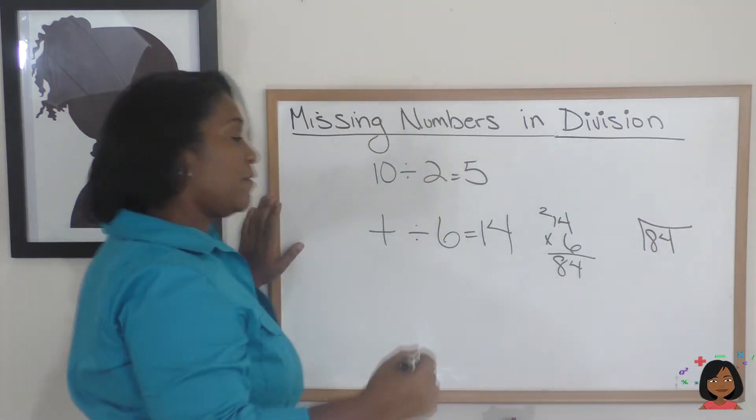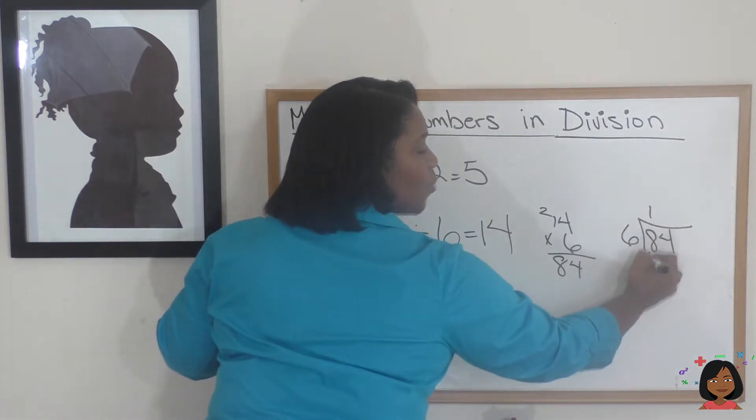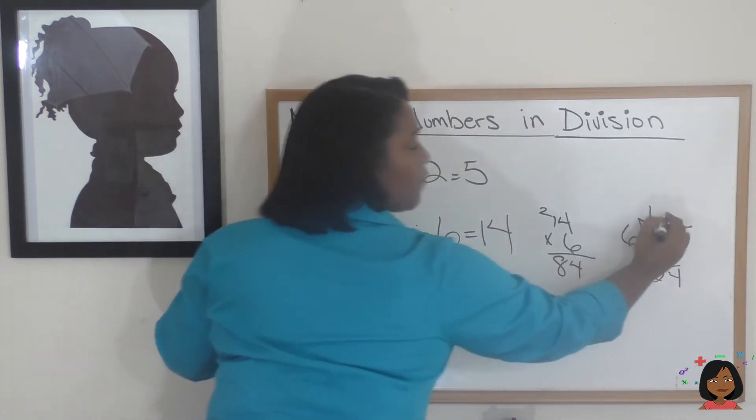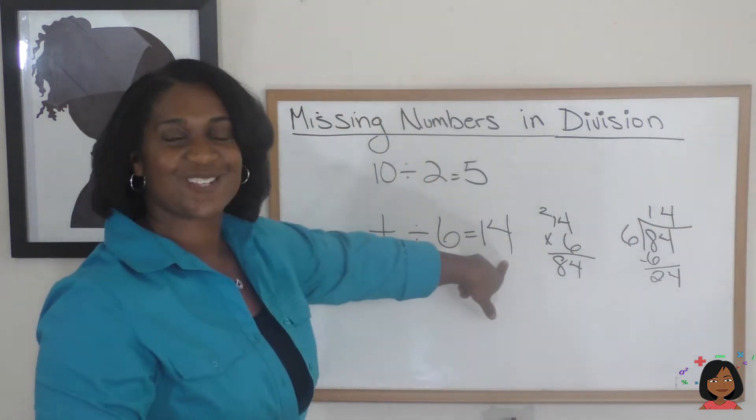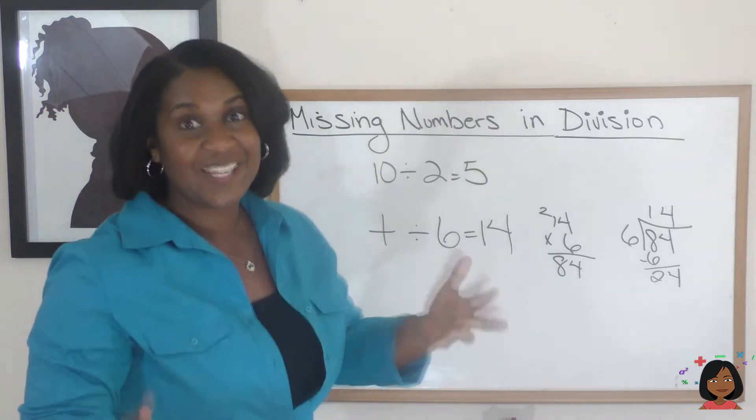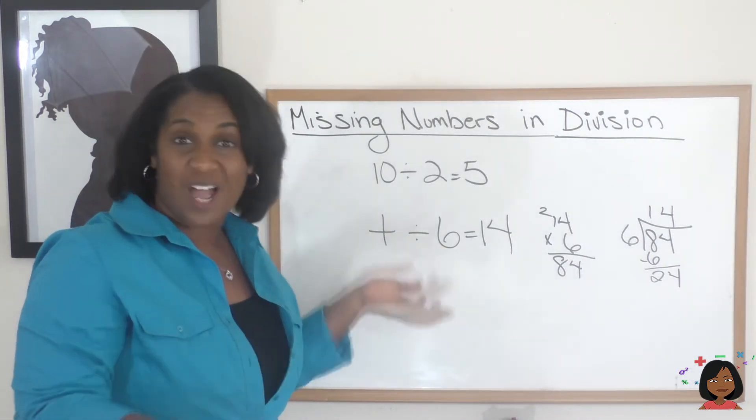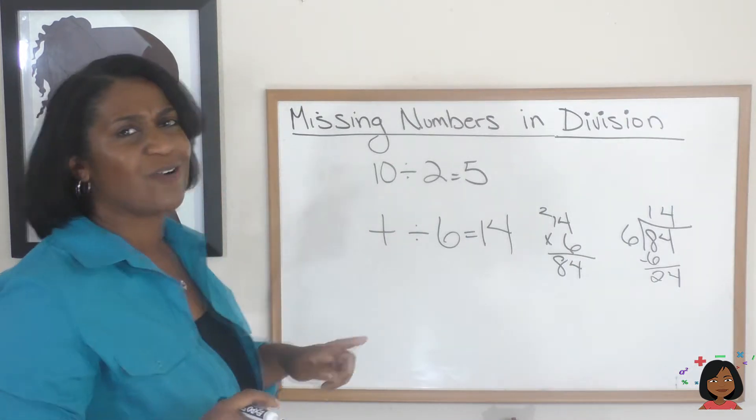But let's just check it to make sure. What's 84 divided by 6? 84 is our dividend so it goes on the inside, our divisor is 6 so it'll go on the outside. 6 into 8 goes 1 time, and 6 into 24 goes 4 times. There you go, there's the right answer. So we used multiplication to find the missing number, which in this time was our dividend.